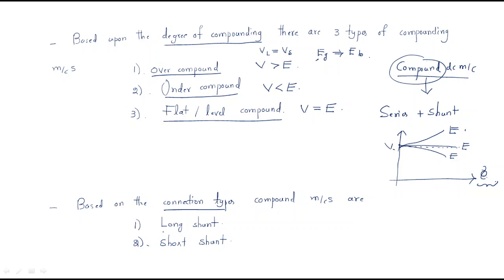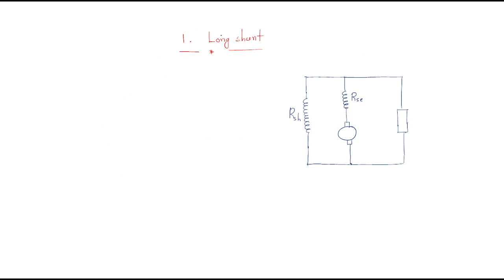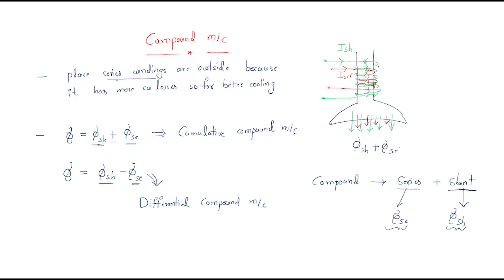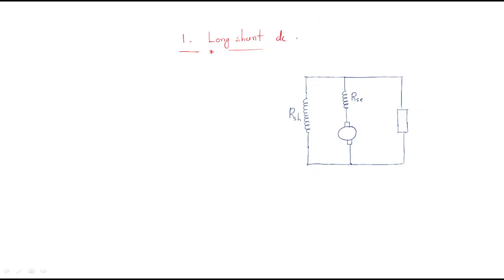Based on connection types, compound machines are divided into two types: one is the long shunt and another is the short shunt. By observing the connections you can understand the difference between the long shunt and the short shunt. We will first go into the long shunt DC generator. The configuration and arrangement of the windings has already been discussed.